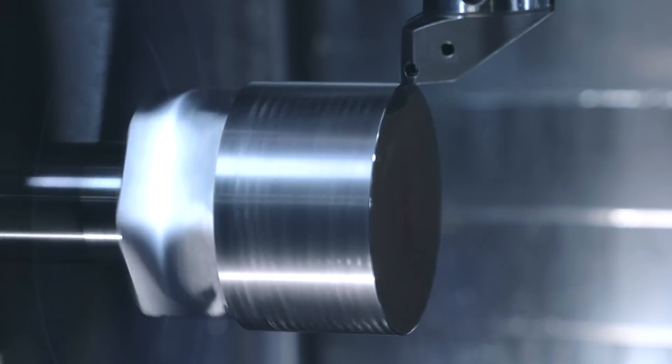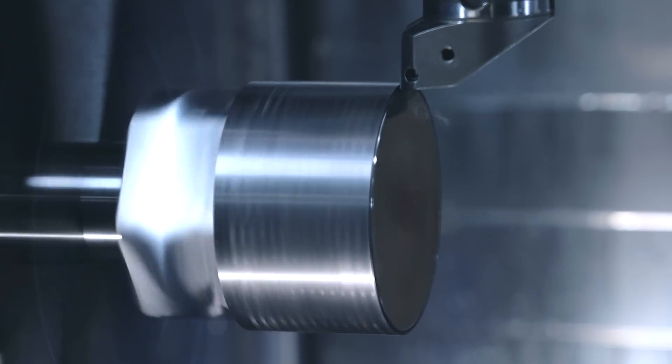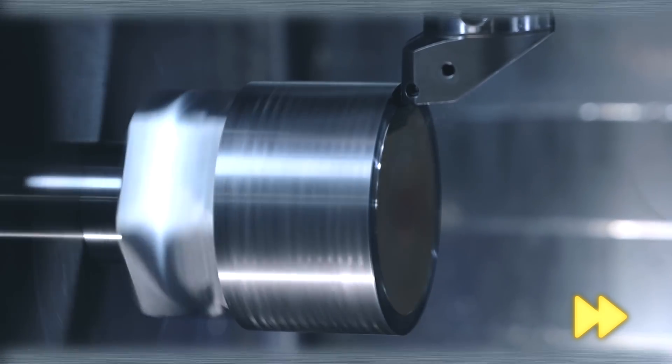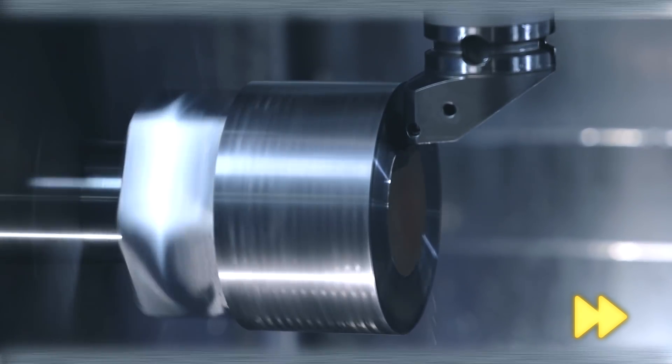Now that our part is flipped around we're going to start off by facing the back end of the part and bringing our overall length of 18 inches to size. This is the same CNMG 432 that ran on the previous operations.